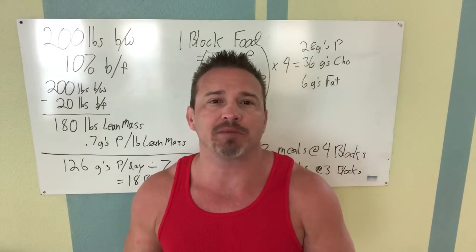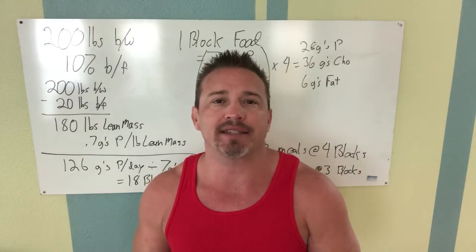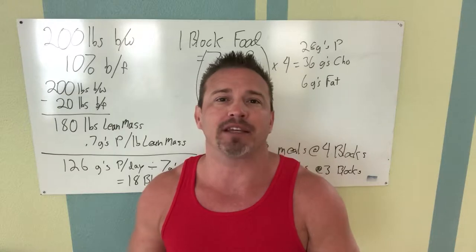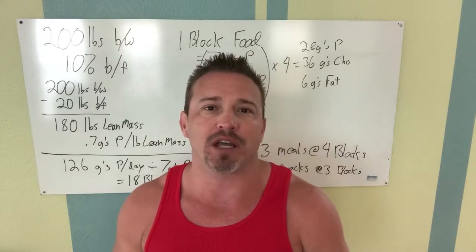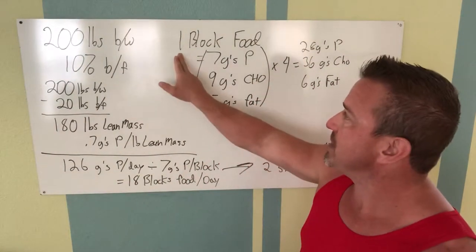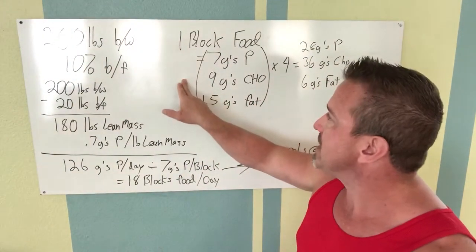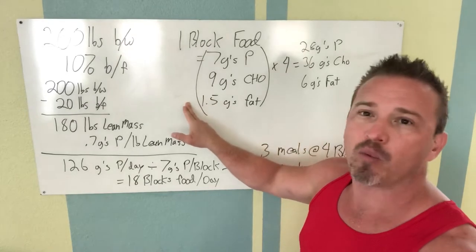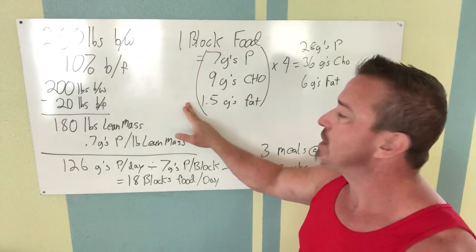It's essentially a great place to start for most people because it's a balance between carbohydrates, proteins, and fats, and something that you can mathematically adjust easily as time goes on. A block of food is seven grams of protein plus nine grams of carbohydrates and one and a half grams of fat.